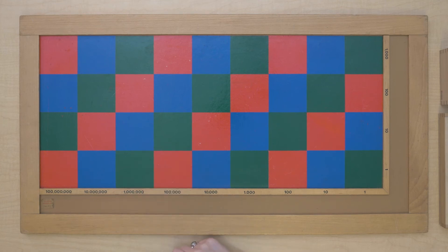Let me show you something else. If I place this bead bar up here on that square I have to slide it down on the diagonal to be able to read its value. This is 5,000.